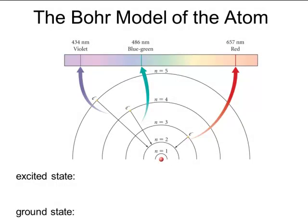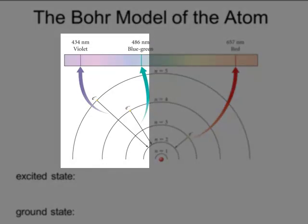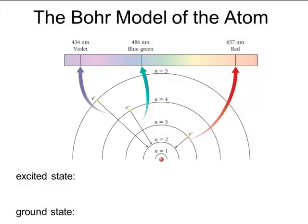Looking at a picture with a nucleus in the center and quantized energy levels around it — N equals 1, N equals 2, and so on — we can see different transitions of an electron. Those different transitions are going to have different energies associated with them. Remember, energy is also associated with wavelengths of light as well as frequency. For example, looking at the violet transition: if an electron is at N equals 5 and moves to the N equals 2 energy level, it's going to lose energy, and that energy produces a violet color — 434 nanometers of light.